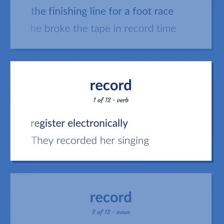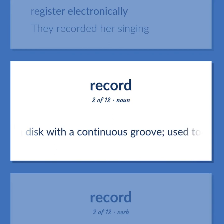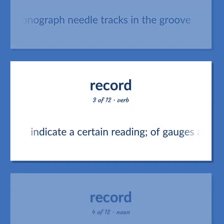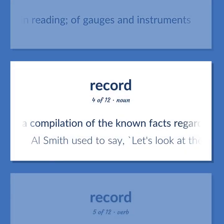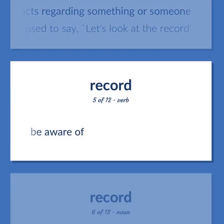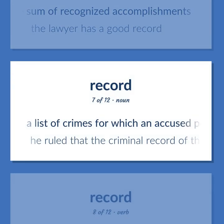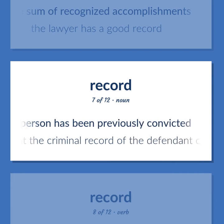Record: Register electronically. They recorded her singing. Sound recording consisting of a disc with a continuous groove, used to reproduce music by rotating while a phonograph needle tracks in the groove. Indicate a certain reading, of gauges and instruments. A compilation of the known facts regarding something or someone. Al Smith used to say, 'Let's look at the record.' Be aware of. The sum of recognized accomplishments. The lawyer has a good record. A list of crimes for which an accused person has been previously convicted. He ruled that the criminal record of the defendant could not be disclosed to the court.